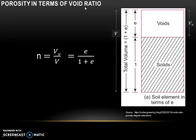Next is porosity in terms of void ratio. In the phase diagram, solids and voids are shown. Volume of voids is denoted by VV, and here we have assumed that volume of solids Vs is equal to 1. Voids is represented by E, so total volume becomes 1 plus E. Using the formula for porosity, N equals VV divided by V, VV will be equal to E and total volume V equals 1 plus E. So N in terms of E is E divided by 1 plus E.